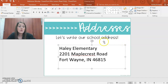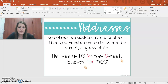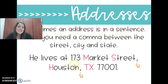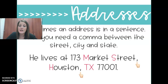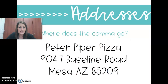Only thing is, if you do this, we don't know who to open it. So you might want to say it's at Haley Elementary. A lot of times people will put C/O, which means care of — care of Kimberly Yonke at Haley Elementary. So there's sometimes an extra piece in there. Sometimes an address is in a sentence, and then you need a comma between the street, city, and state. For example: he lives at 173 Market Street, comma, Houston, comma, Texas, 77001. What I really want you to focus on is putting a comma in where it would be if it was on an envelope like this.